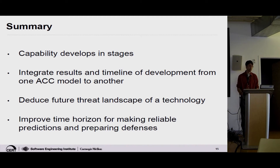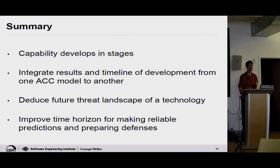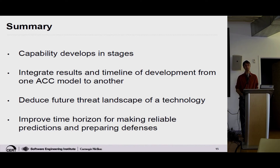So I put forth that we should model adversarial capability as going in stages. I think we have reasonable reason to think this, and it helps us figure out a future threat landscape more accurately. My estimate is it stretches us to about 18 months to three years out instead of six months, because it helps us make predictions.